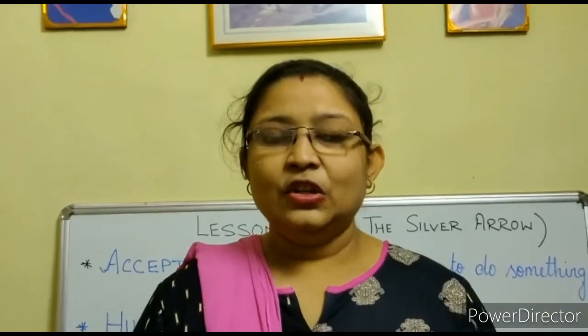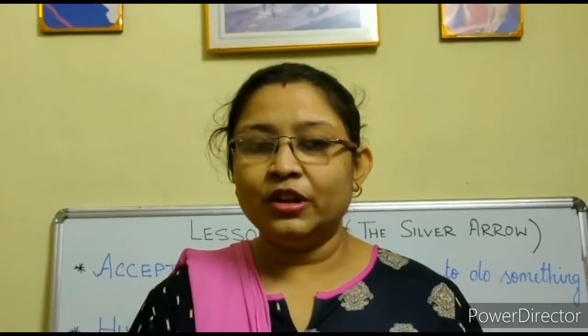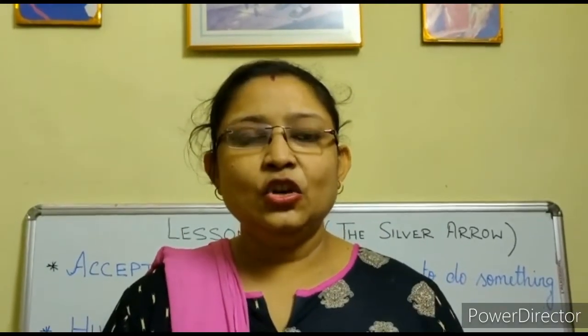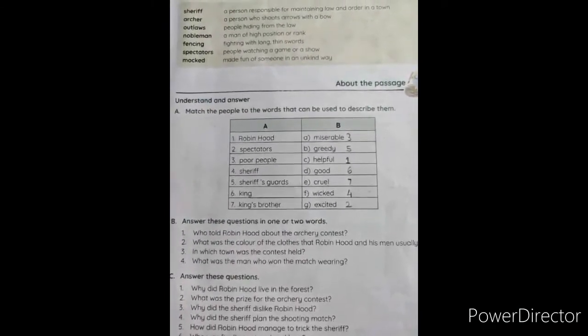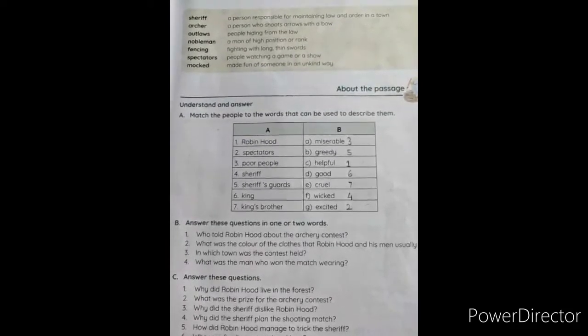A very warm welcome to all my lovely students. Welcome back to your English class. I have completed the summary and the detailed reading and explanation of Lesson 3, The Silver Arrow. Today in this video, I will be doing the textual exercises. Please take out your English course book and while I explain the exercises and tell the answers, you also note down all the answers in your English course book. Students, Lesson 3, page number 27. Let us start the textual exercises.